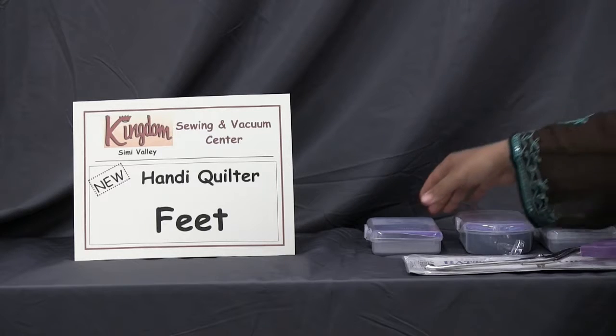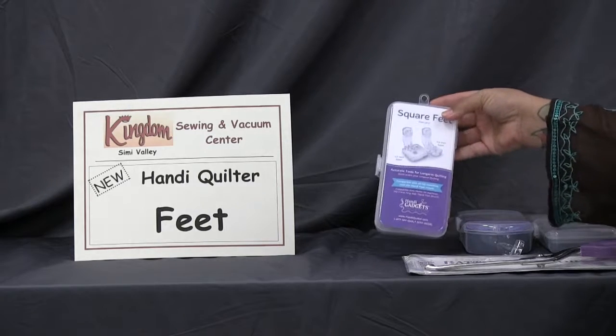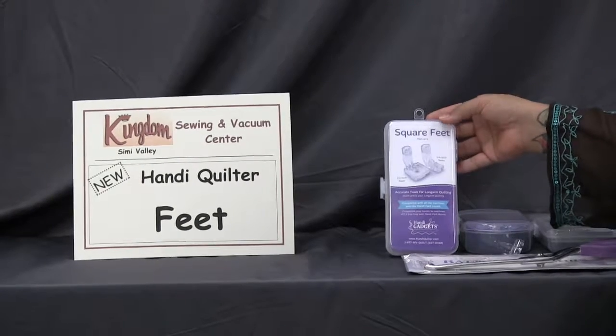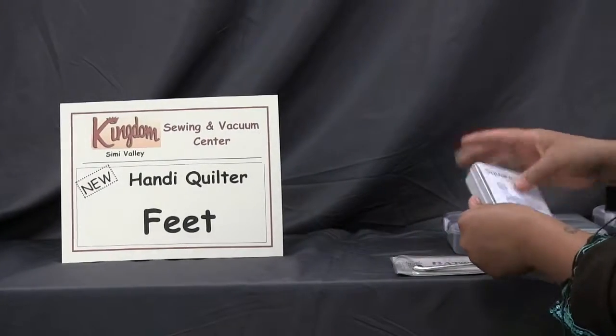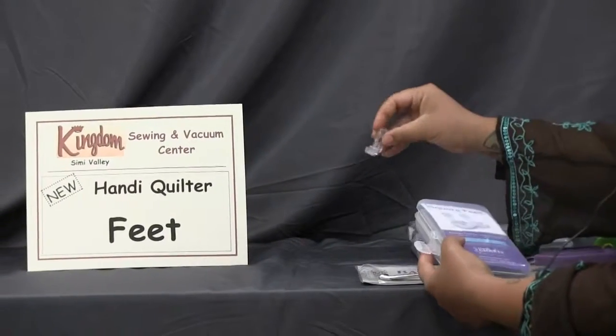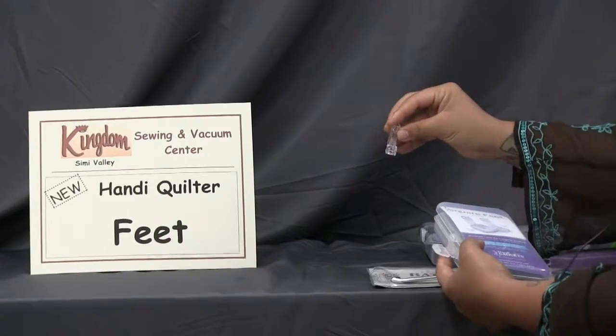I wanted to start off with a brand new one. This one just came out and we were just able to get it in. This is the Handy Quilter Square Foot. It actually comes in a set of two, a quarter inch and a half inch seam allowance.